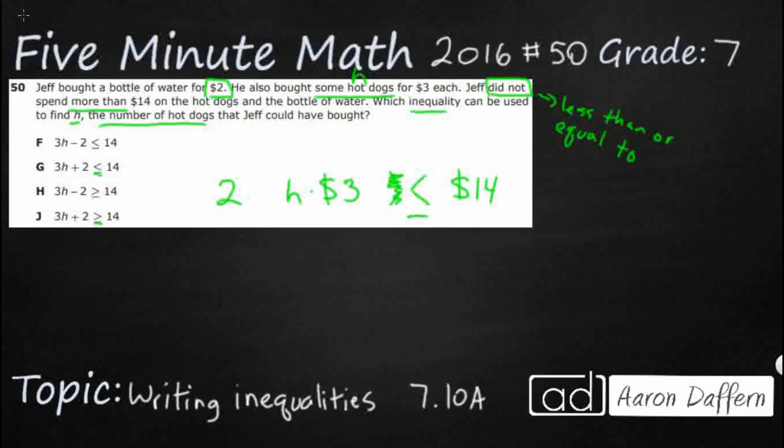All right. So we've got a multiplication there. We've got a less than or equal to 14. What are we doing with this $2? Well, if we're going to spend $2, we need to add that to the total of the hot dogs. And that's going to get us this equation.